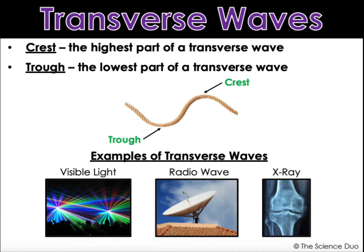Let's talk about some specific things on the transverse wave. The highest part of a transverse wave is called the crest. We have this middle line here — the highest part it travels up is the crest and the lowest part that it travels down to is called the trough. Some examples of transverse waves are visible light, radio waves, and x-rays. All of those waves travel in this transverse type of wave, which is moving at a right angle to the direction that it's going.